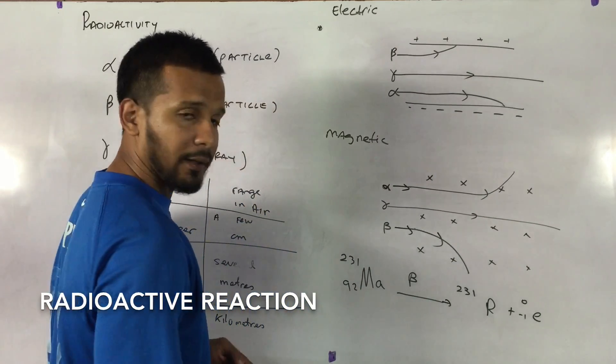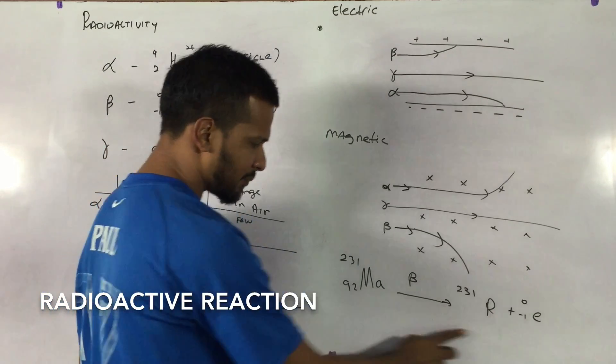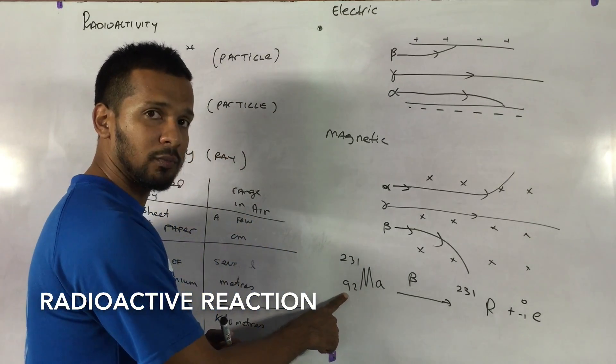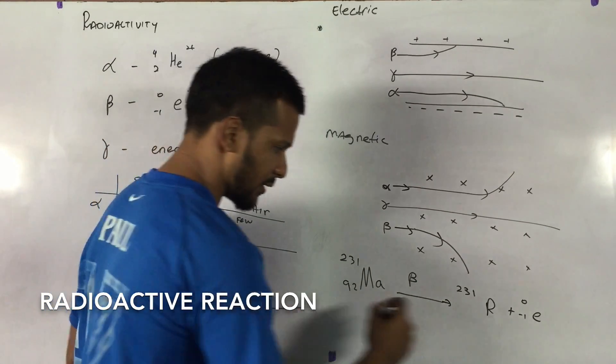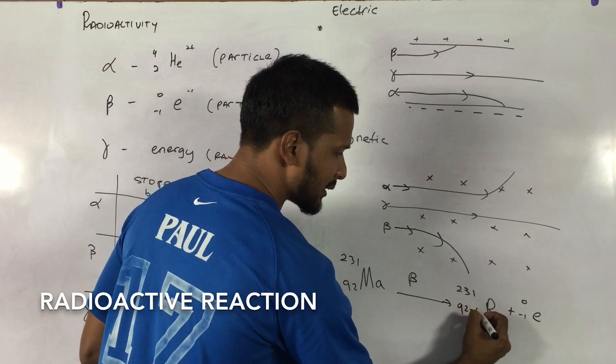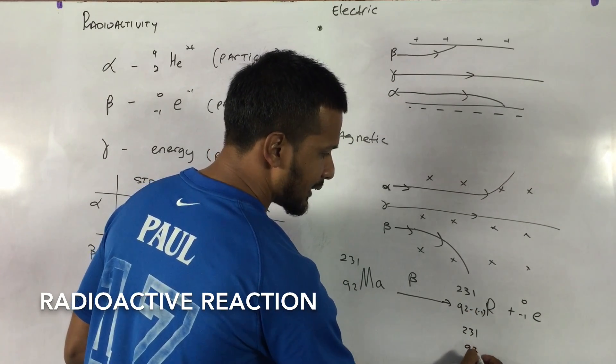Let's use R. And what will happen now? This plus this must be equal to 92. So this value here is what? Very good. It's 92 minus minus 1, which is 231, 93.